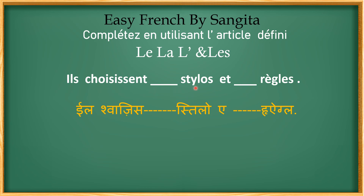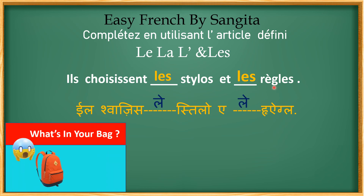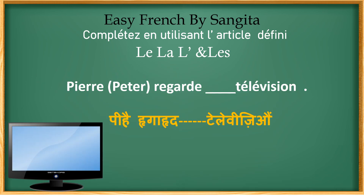Next sentence: ils choisissent ___ stylos et ___ règles. Stylos is plural and règles is also plural, so straight away put the plural article les for both: les stylos and les règles. So: ils choisissent les stylos et les règles — they choose the pens and the rulers. There's a video on what's in your school bag in the description box covering masculine and feminine of all these items.